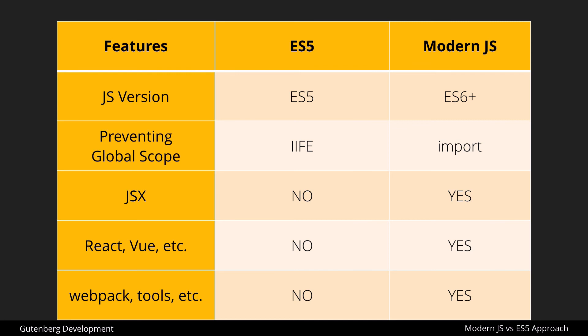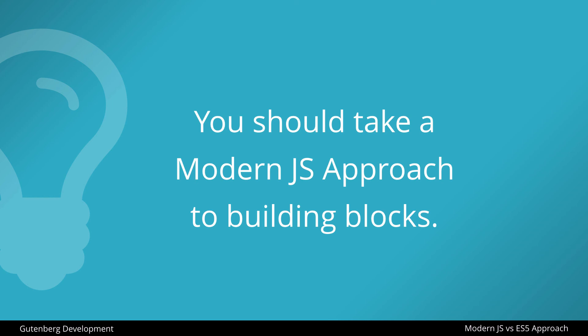Last in the table is tooling — Webpack, linting, Babel, transpiling — none of which will be present in the ES5 approach, whereas modern JS has all of that built in. Looking at this list, it should be clear that you really should be taking a modern JS approach to building blocks. WordPress developers have been encouraged to learn JavaScript deeply, and blocks rolling out into WordPress core is evidence of why that is so important. So in this course we're going to take the modern JS approach to building everything.